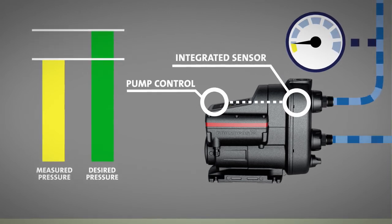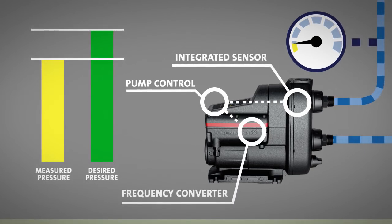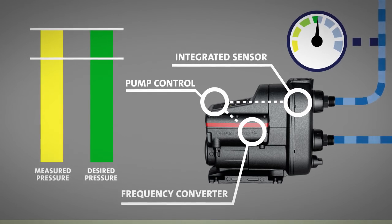If there is a difference between these two measurements, the pump control signals the frequency converter to increase or decrease pump speed and thus the water pressure in the system.